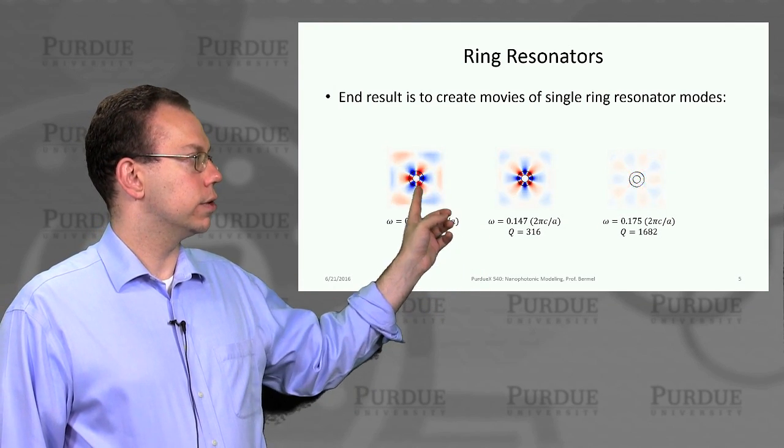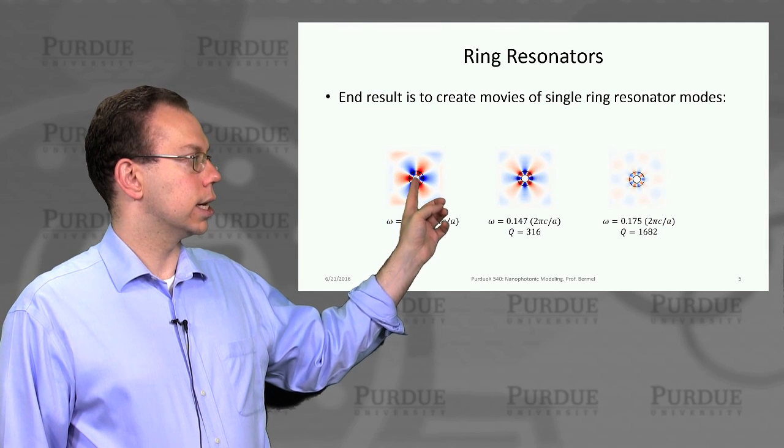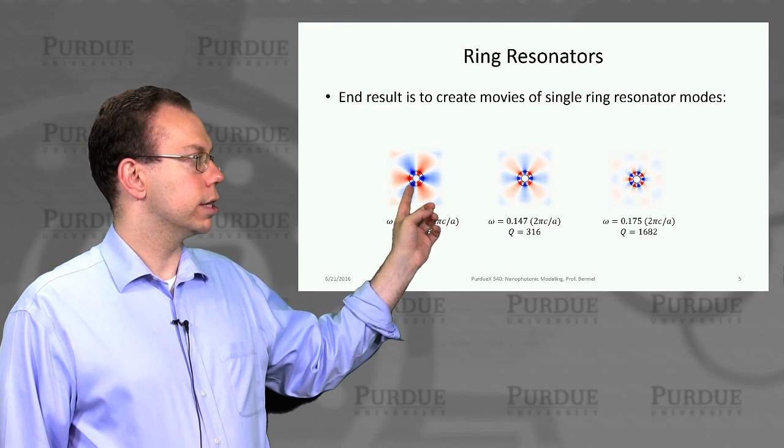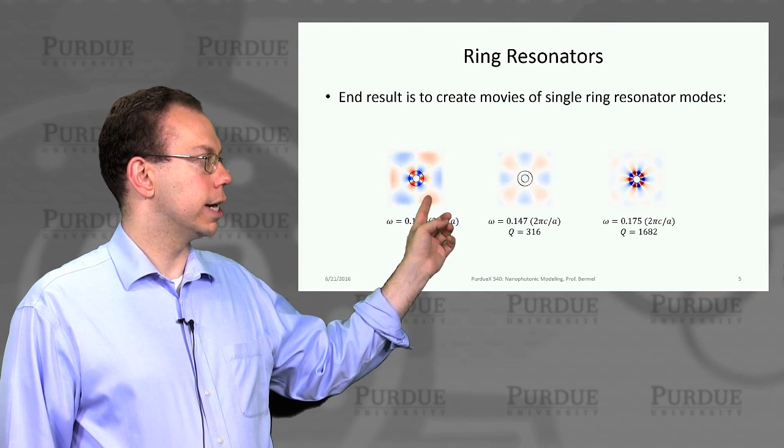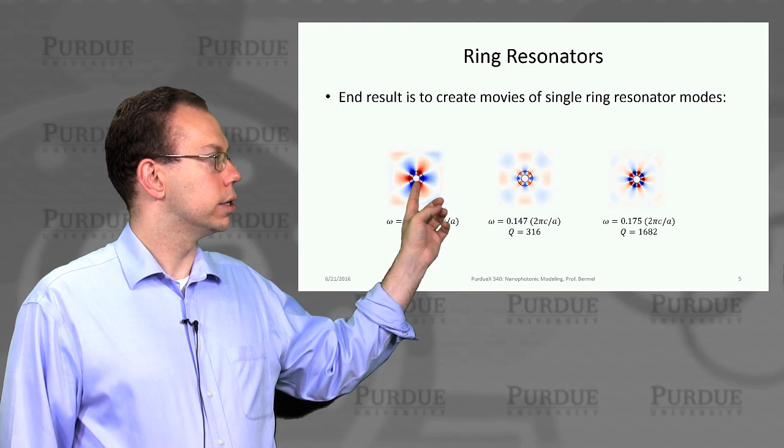At the lowest frequency, you can see it has the longest wavelength. There's only basically three periods as you go around and then it's radiating lots of power. That's why the field intensity outside is very strong.